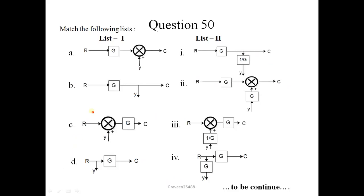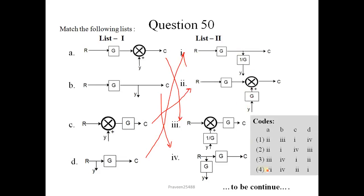Next question is question number 50: Match the following list. In this diagram, when this summing point moves left side of this block gain, correct match is this one, option number 3. When takeoff point moves backward or left side of this gain, this G will remain the same, so its correct is fourth. When summing point moves ahead of this block, correct match of this block is 2. And when takeoff point moves away, its correct match is this one. Correct option is 4: 3, 4, 2, 1.